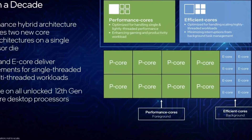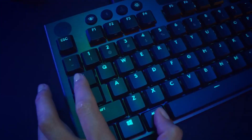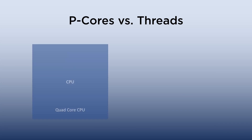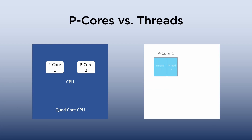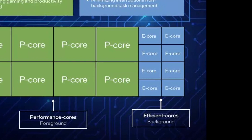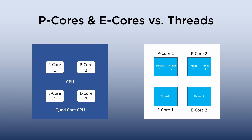P cores, also known as performance cores, are physically larger, high-performance cores designed for raw speed while maintaining efficiency. These P cores offer multi-threading capabilities, like the aforementioned hyper-threading, meaning that each P core will have two threads. E cores, also known as efficiency cores, are physically smaller, with multiple E cores fitting into the physical space occupied by one P core.